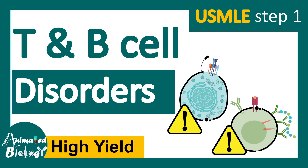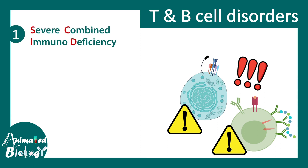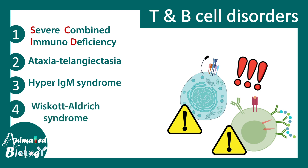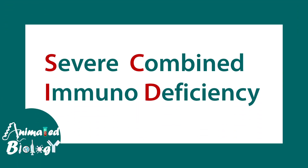In this video, we'll talk about T-cell and B-cell disorders. This is a fan requested video. We would learn four major diseases: first, severe combined immunodeficiency; ataxia telangiectasia; hyper-IgM syndrome; and Wiskott-Aldrich syndrome. These are the four syndromes that we would look at.